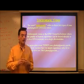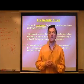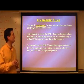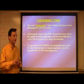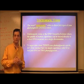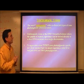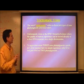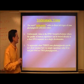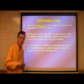There are other animals that have more than three cone types. Some birds, for example, have four cone types, so they would not be trichromatic, but we are trichromatic as a species, generally speaking. Trichromatic vision is the only branch of science where the quality of human experience can be traced directly to a short DNA sequence on a single chromosome.